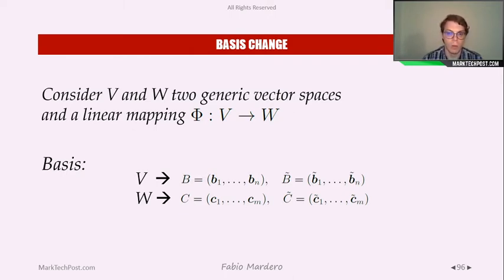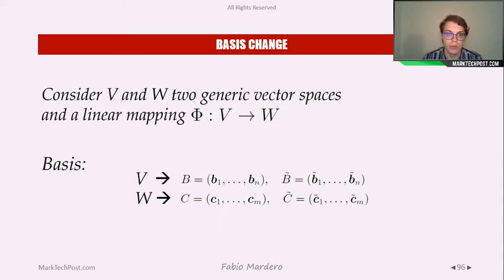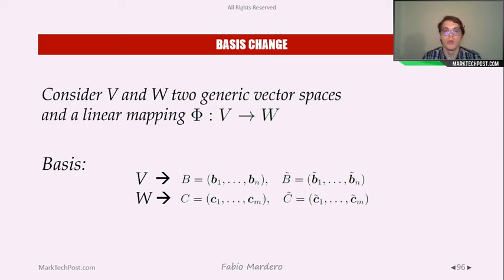We have seen that Cholesky decomposition, taking a square matrix, allows us to transform it into a product of two triangular matrices. But we would like, if possible, to transform the square matrix into a diagonal matrix. To do so, we need to remember what a basis change is.